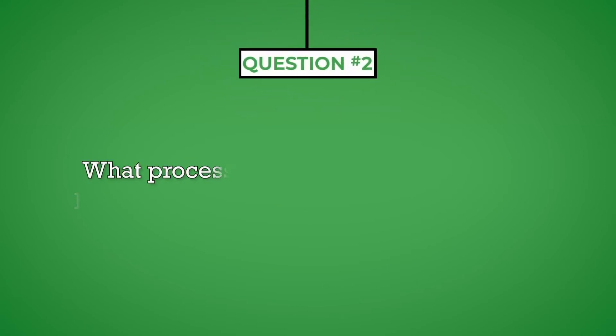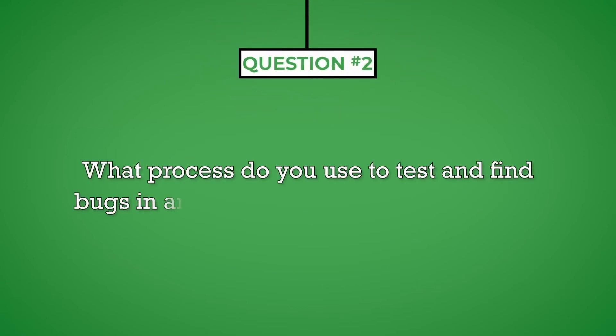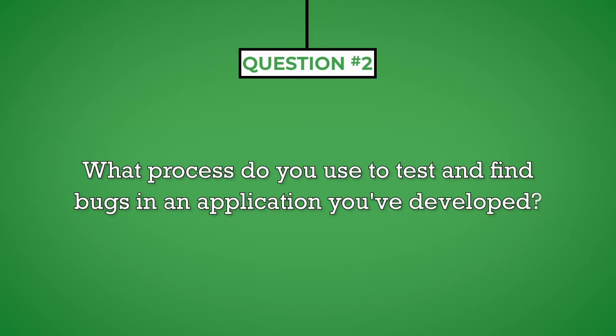Question number two: what process do you use to test and find bugs in an application you've developed? Your interviewer will likely ask a series of questions regarding your process because they seek to understand the steps you generally take in scenarios such as this one. As an experienced software engineer, you should be able to easily describe the procedures you use to test and debug the applications you develop. Since this is an operational question, your answer should be direct and to the point. You should anticipate additional follow-up questions.